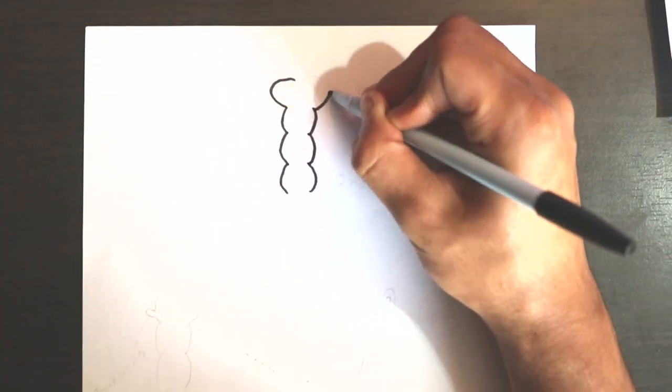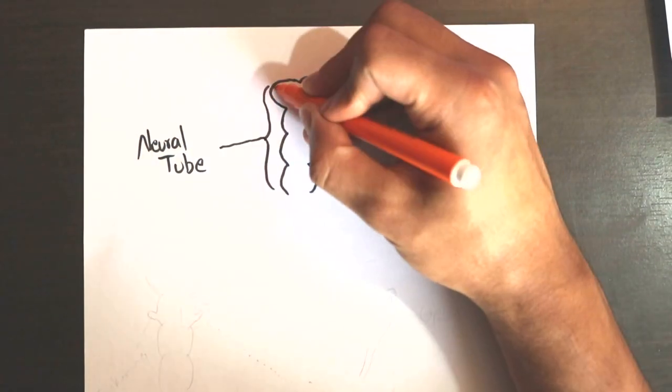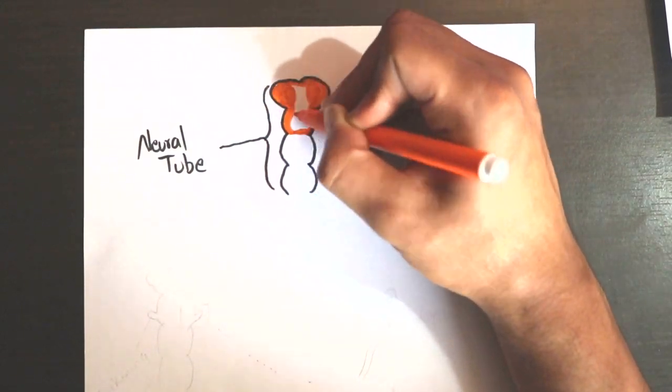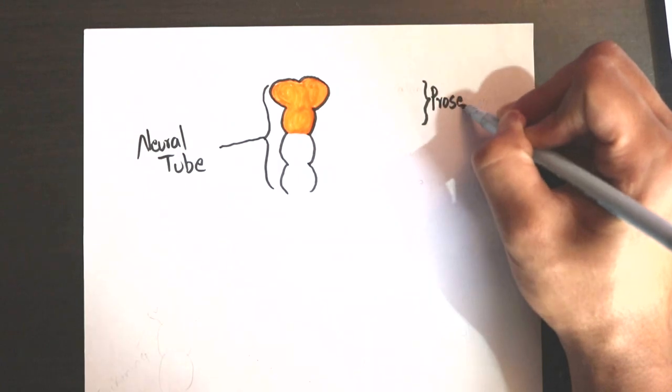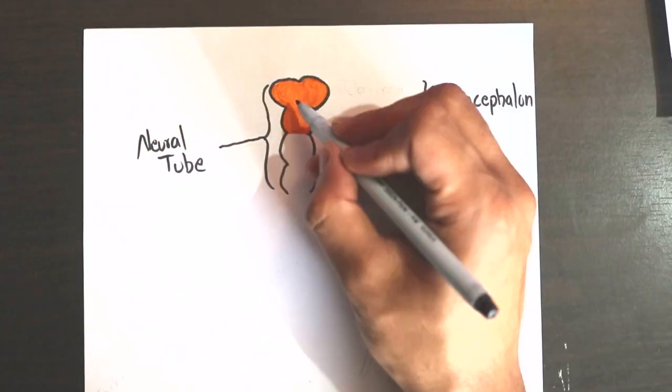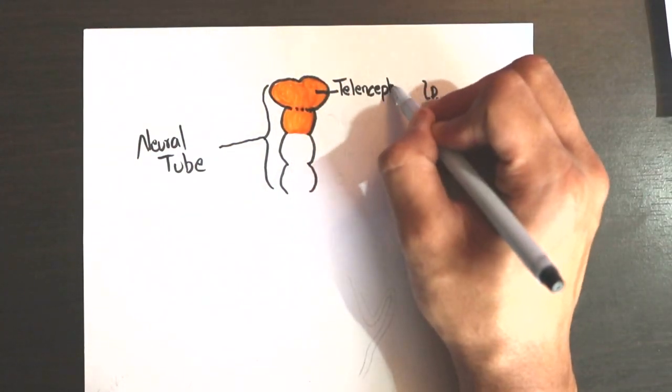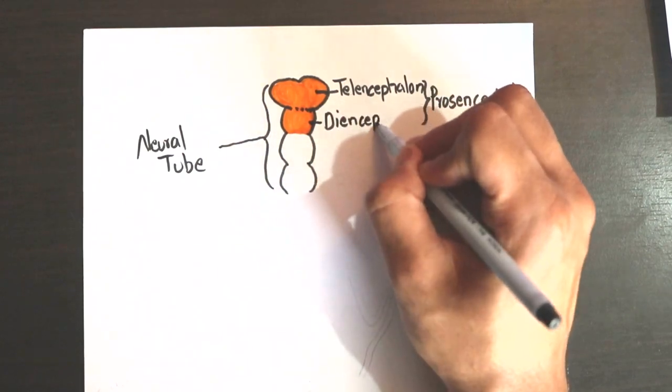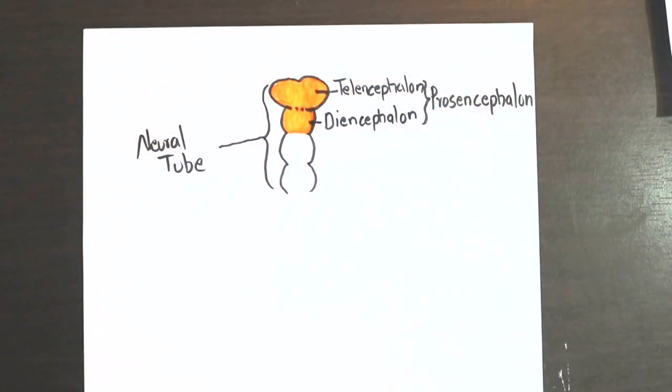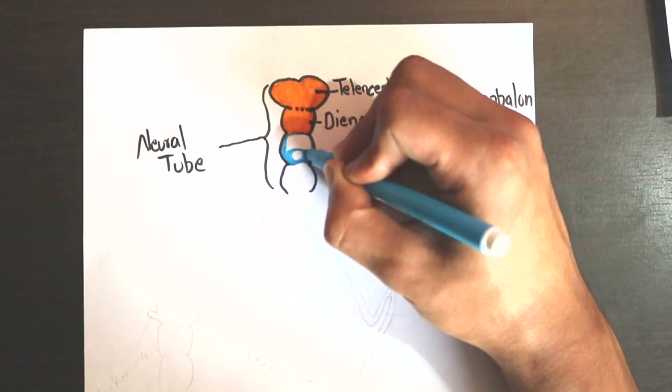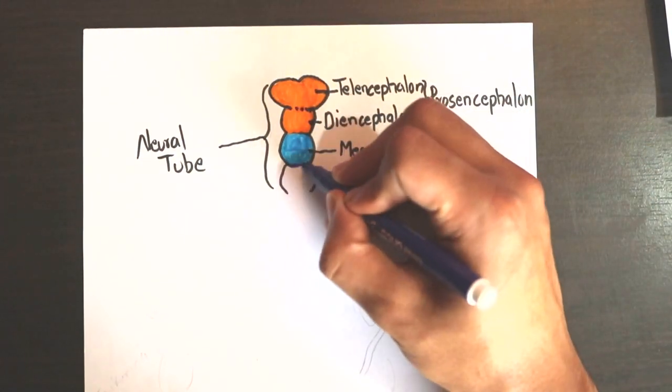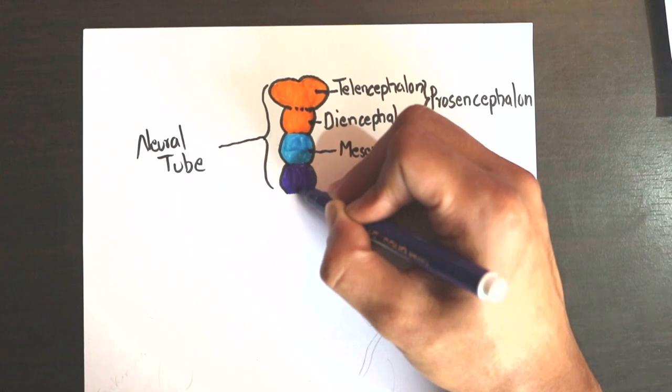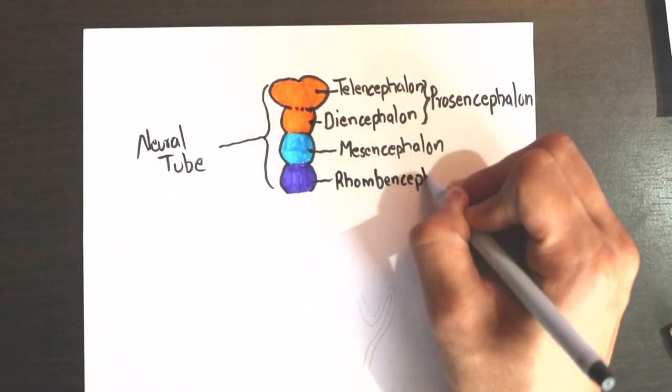In the fifth week of development, swellings appear at the cranial end of the neural tube. Three primitive vesicles appear: prosencephalon, which is divided into telencephalon and diencephalon; mesencephalon; and rhombencephalon, which gives metencephalon and myelencephalon as secondary vesicles.